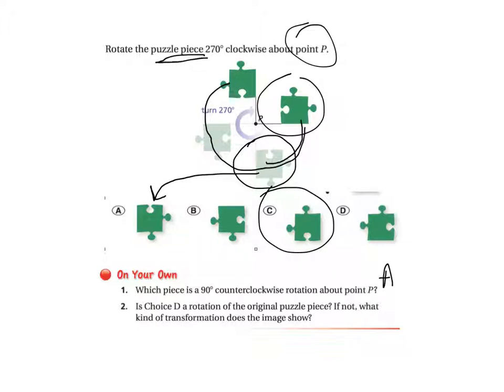Question 2 asks if this is a rotation of the original puzzle piece. And D looks nothing like any of these original pieces. So it is not a rotation. It is actually a reflection. Write these notes down in your math journal, and then push play to continue.